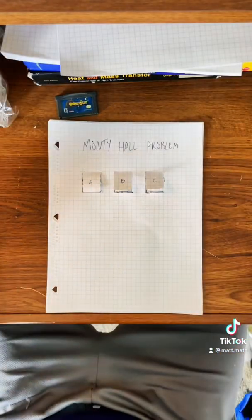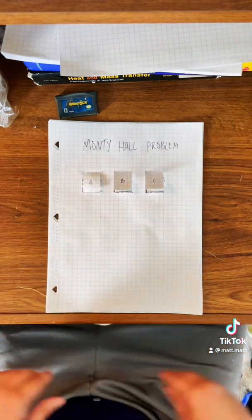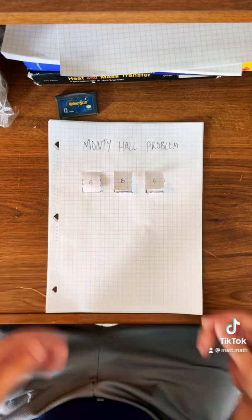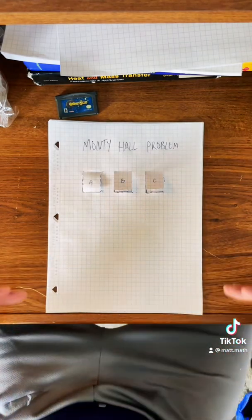So here's how the problem works. By the way, it's called the Monty Hall problem. It's named after the host of Price is Right. So the way it works is pretend you're on a game show, and the way you win is you have to pick which door between A, B, and C has the car behind it.